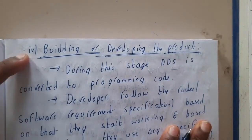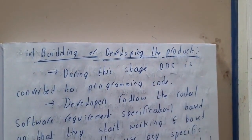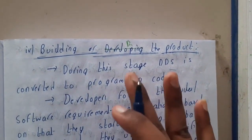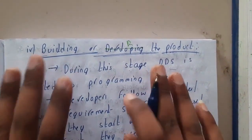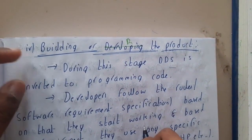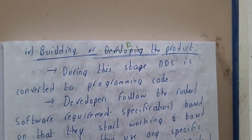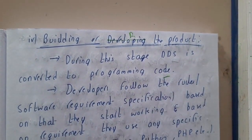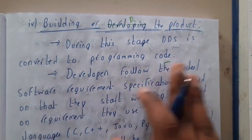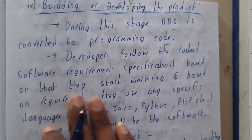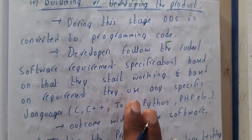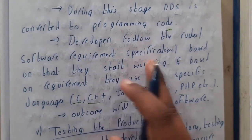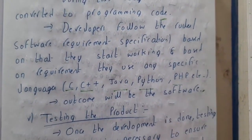After designing, you move to building or developing the product. Based on the design, developers start coding. Once you have a good design, the coding part becomes much easier. During this stage, the DDS is converted into programming code. Developers follow the software requirement specifications and use specific programming languages like C, C++, Java, Python, or PHP based on the requirements, producing the software as an outcome.